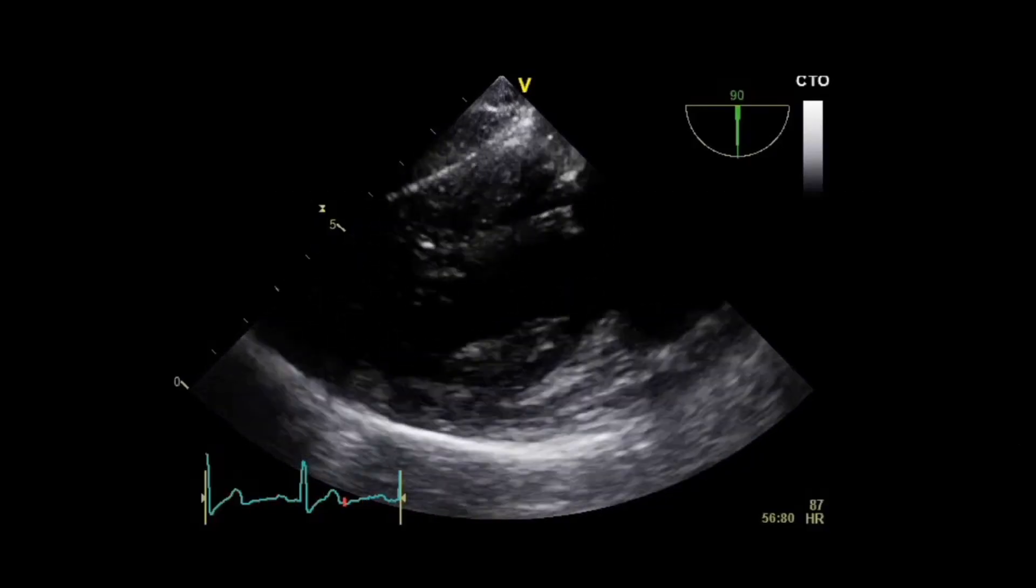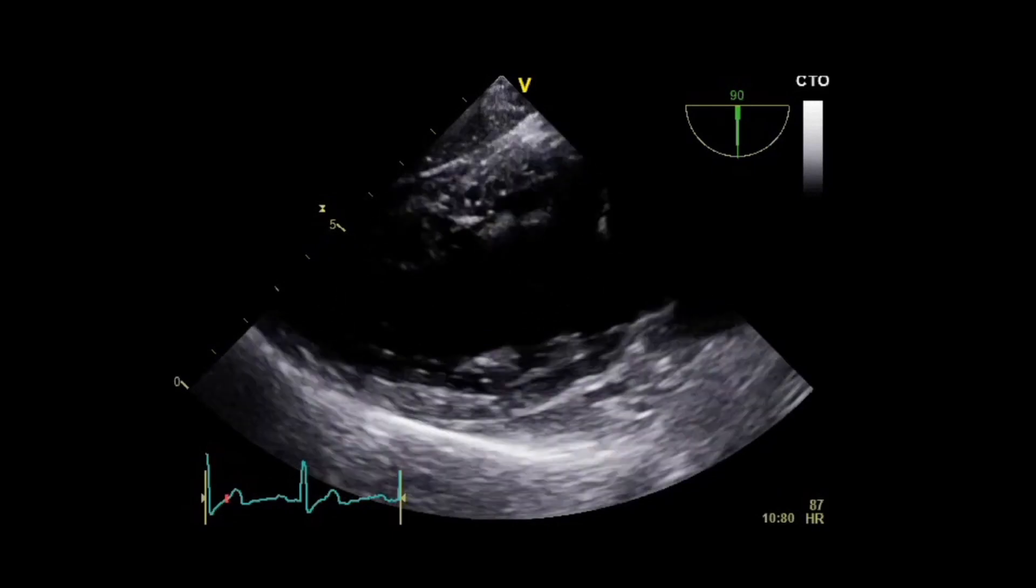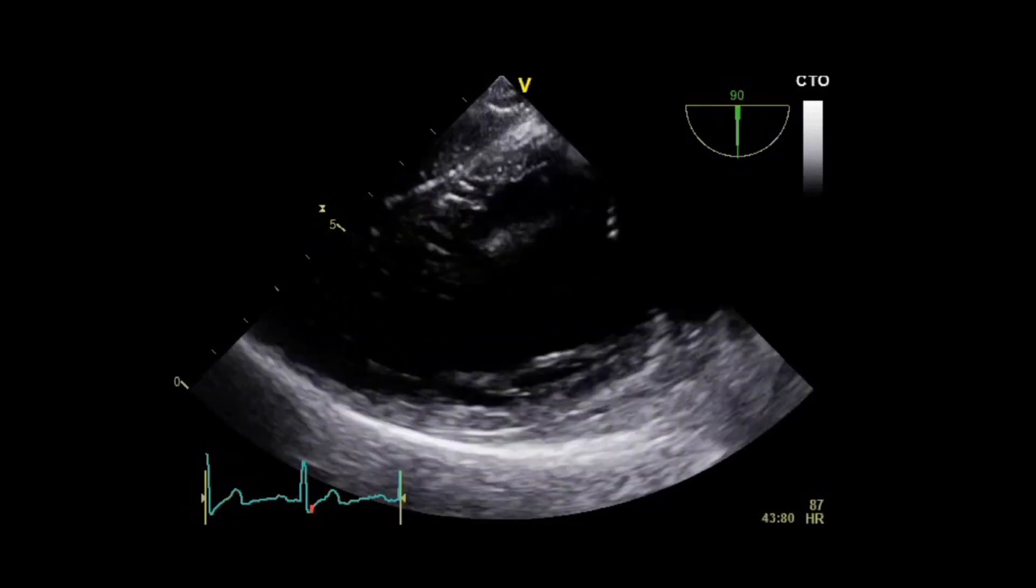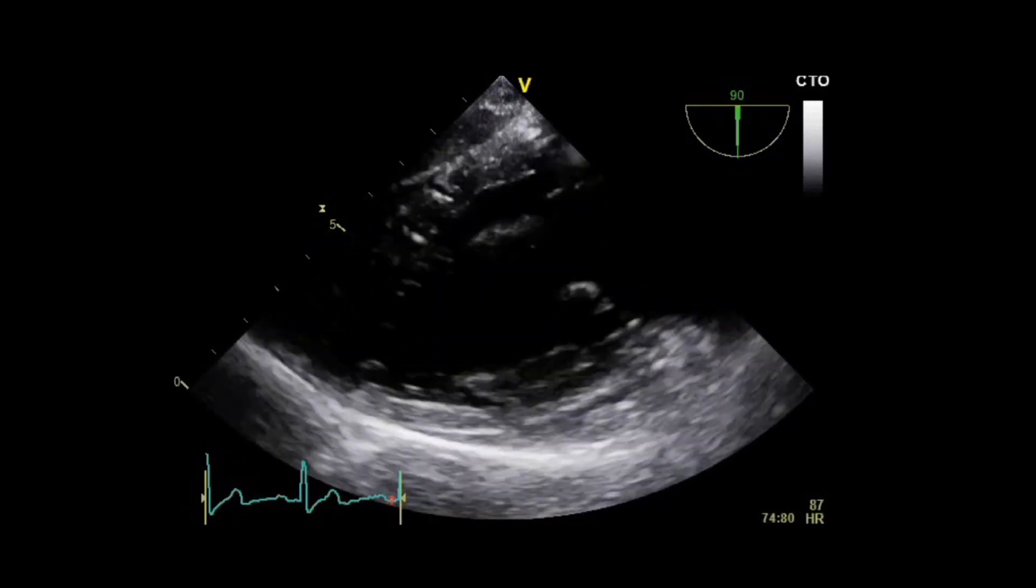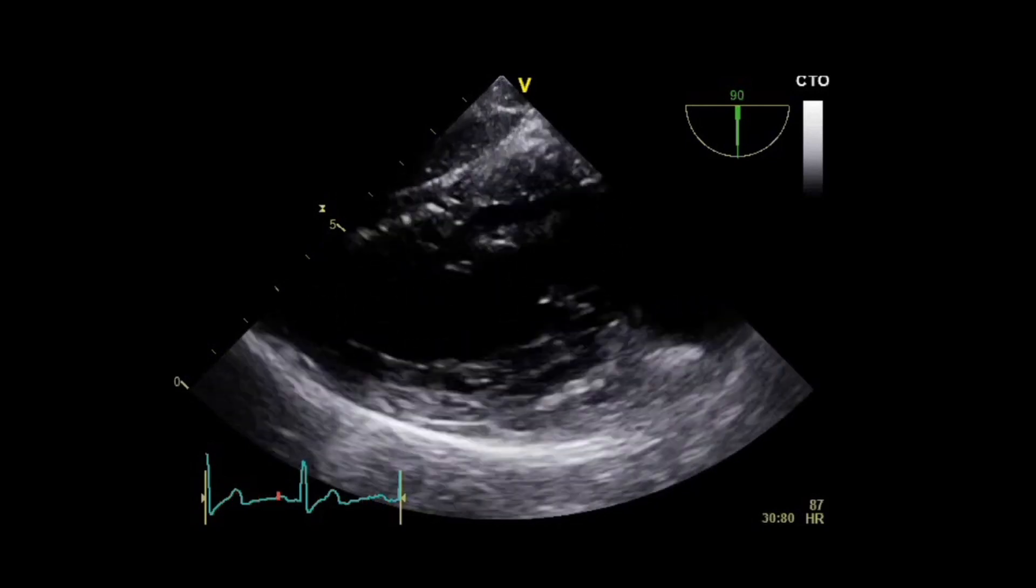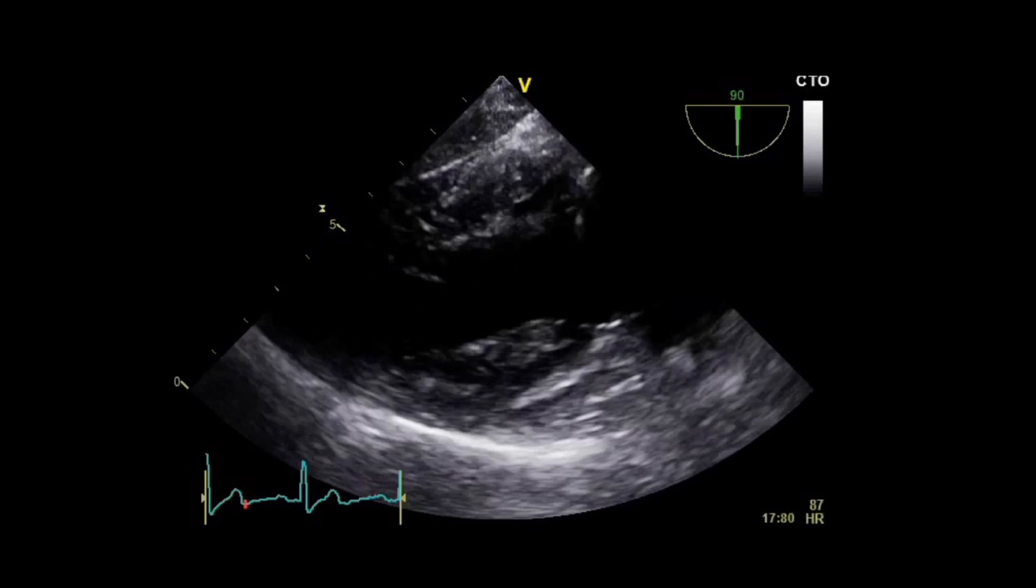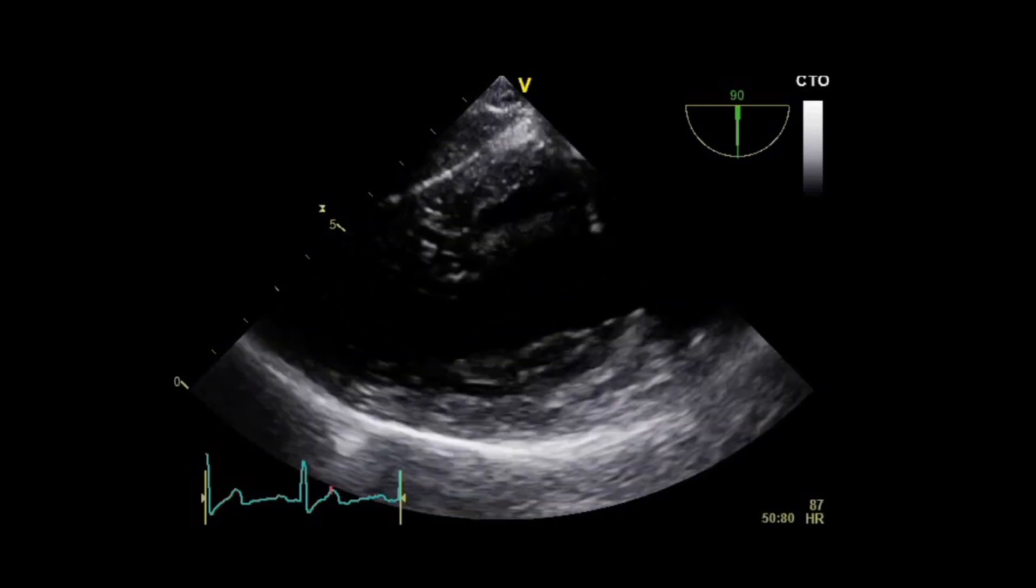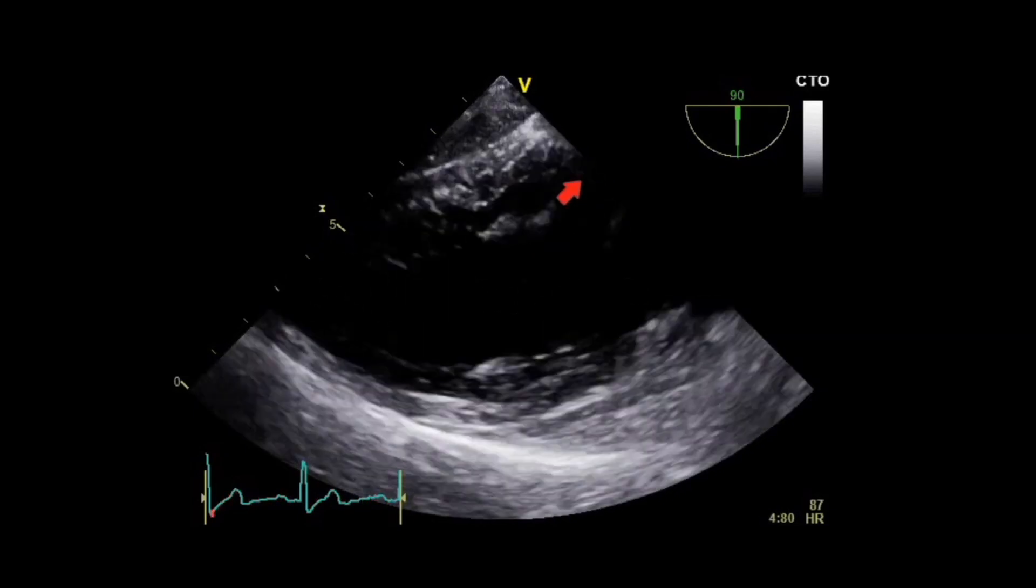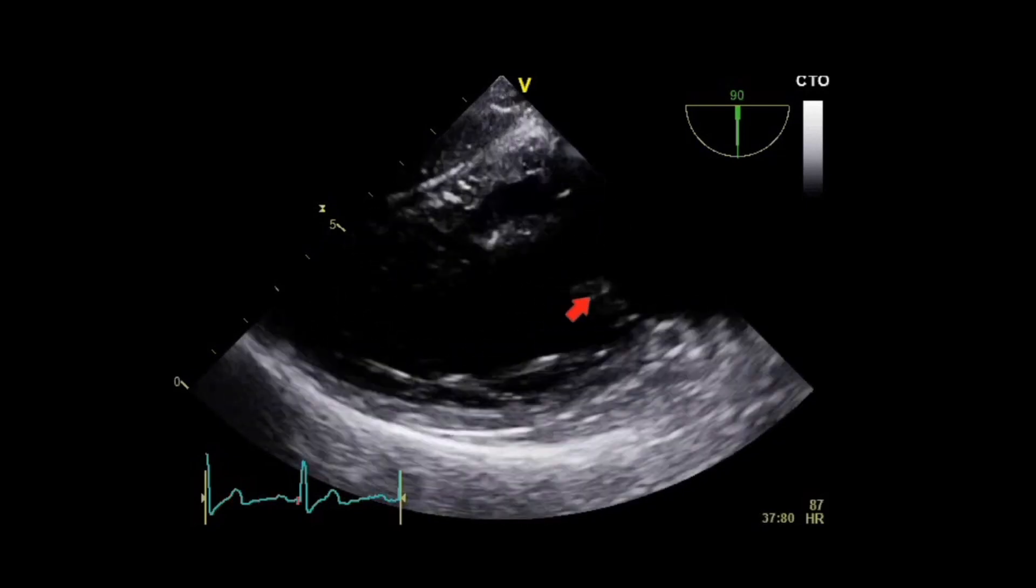And we get to see the subvalvular apparatus particularly well on transgastric views. This is a two-chamber transgastric view which shows the left ventricle here, the papillary muscles, the chordae tendineae and their insertions into the mitral valve leaflets.